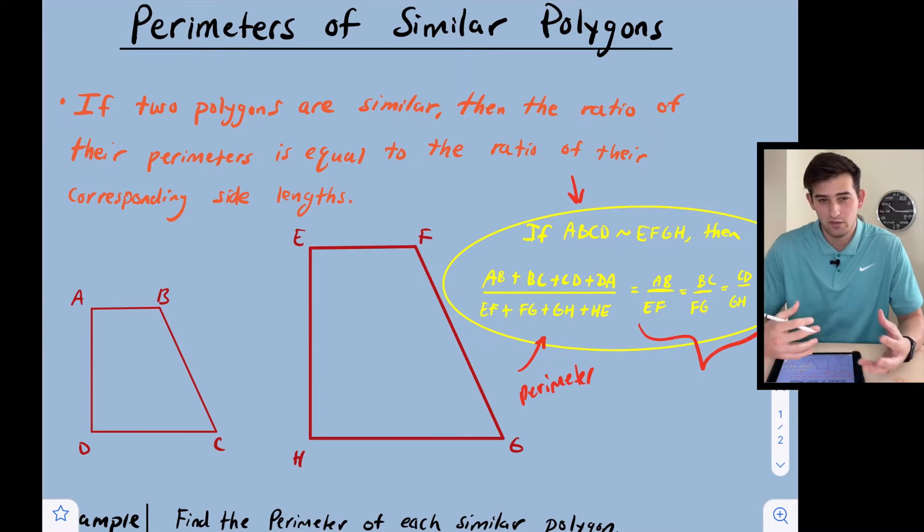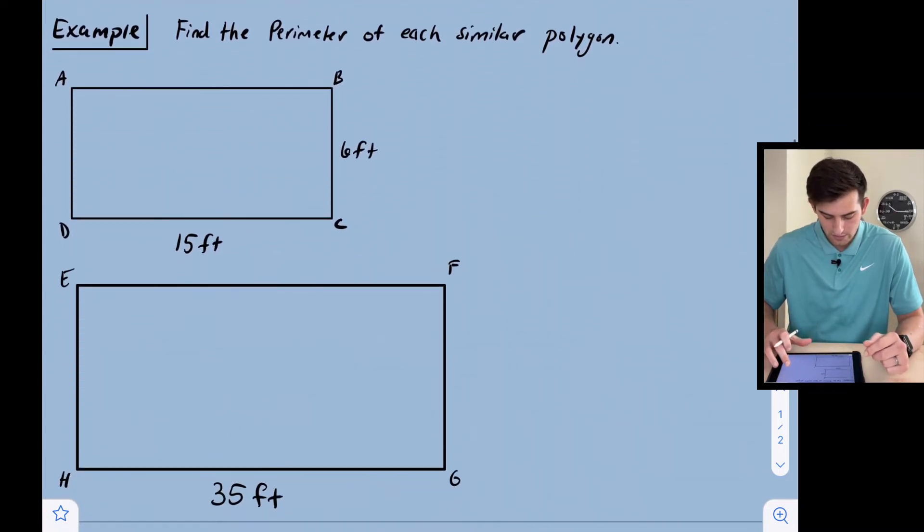When we're trying to solve a problem for x, we just need to know one pair of those corresponding sides. We don't have to know all four. The perimeter is equal to the ratio of the corresponding sides.